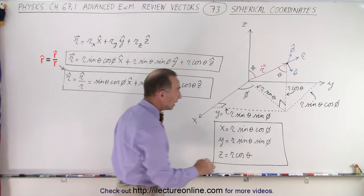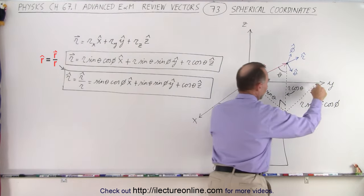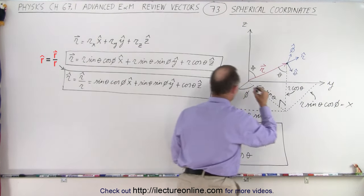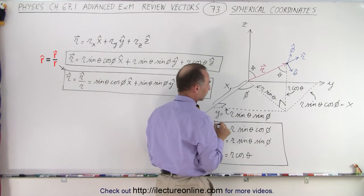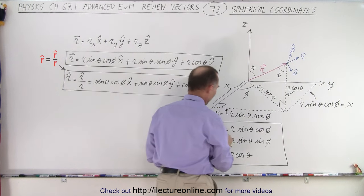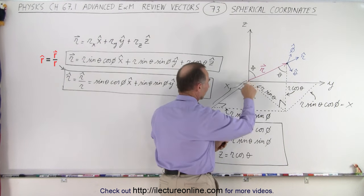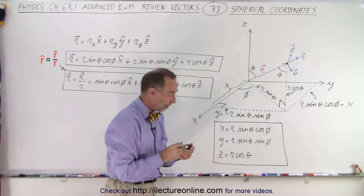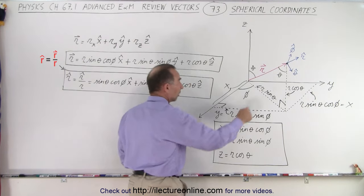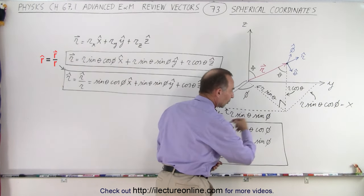Now we have expressions for the x, y, and z coordinates of a point in space in terms of r, theta, and phi: x = r·sin(θ)·cos(φ), y = r·sin(θ)·sin(φ), and z = r·cos(θ). You can see where those equations came from.